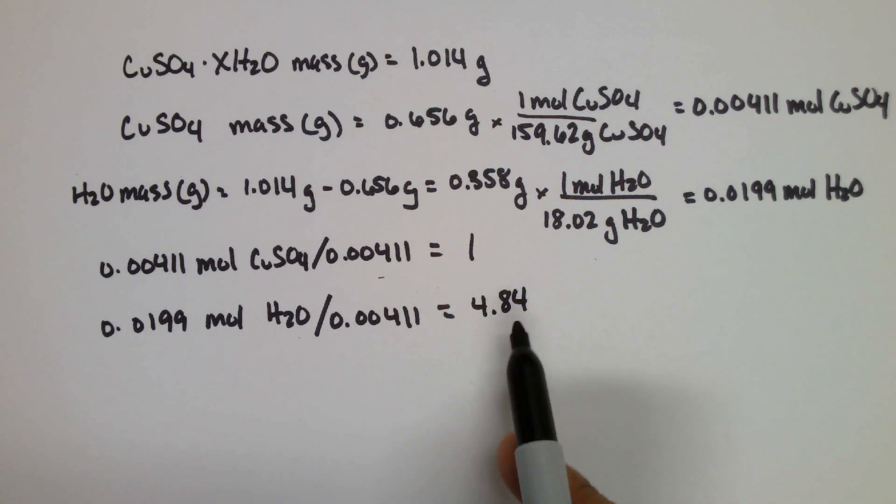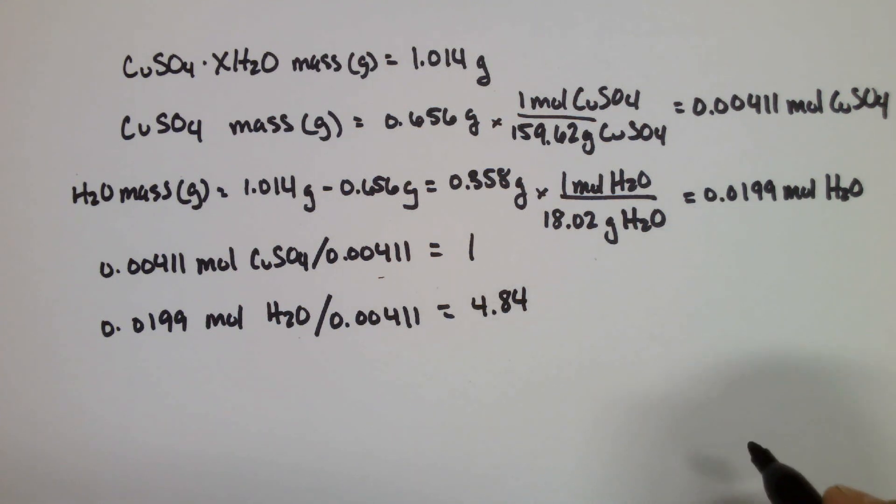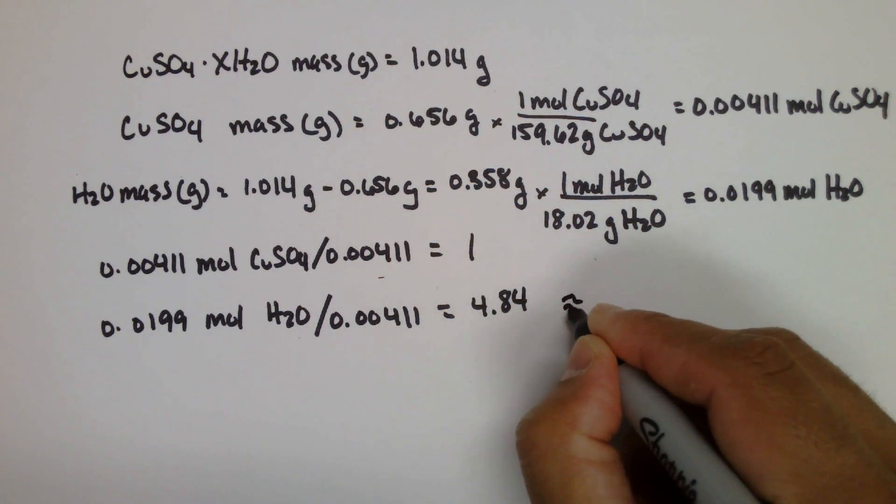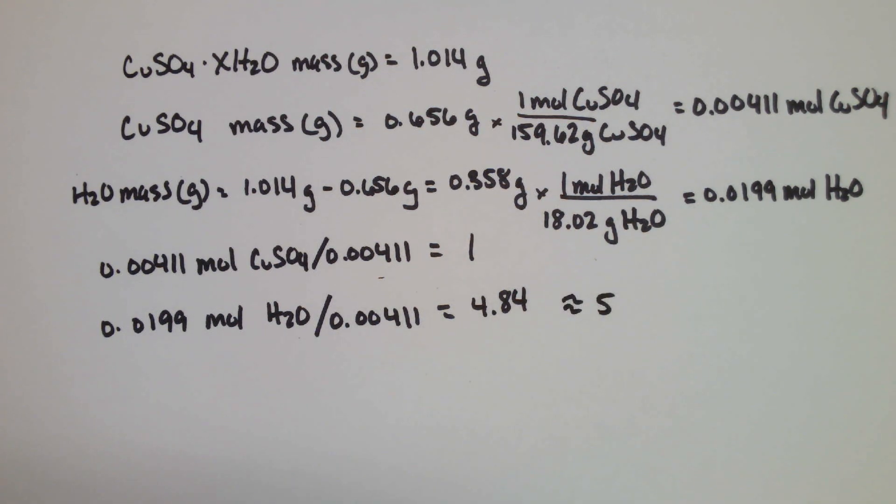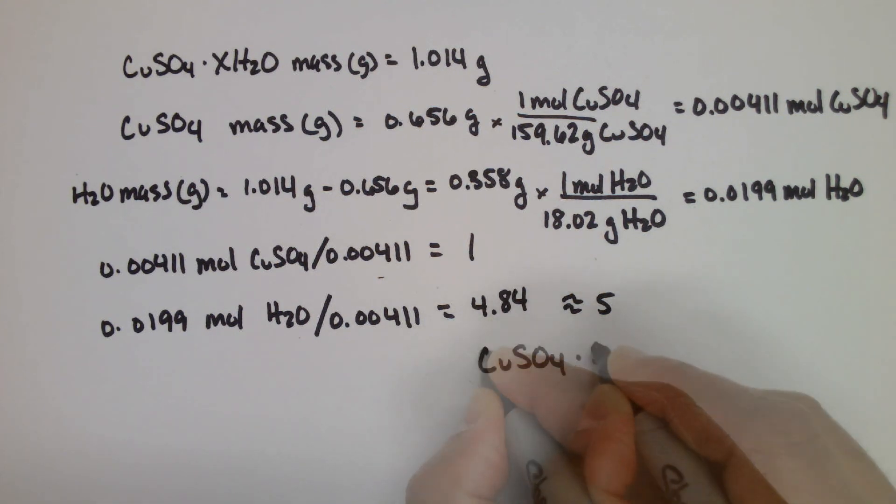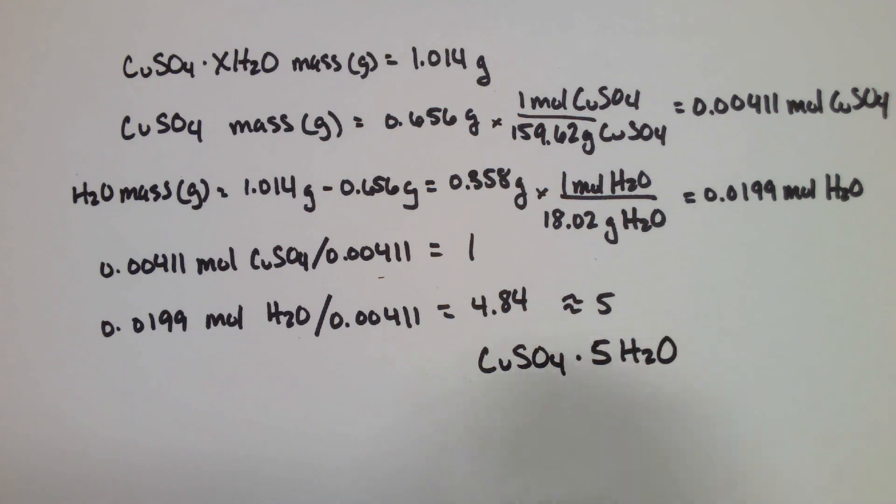Now, the expectation here is that this is a copper sulfate pentahydrate. So we are expecting a ratio of 5 to 1. So this looks pretty good. If you remember your nomenclature, this is a pretty common hydrate, copper sulfate pentahydrate.